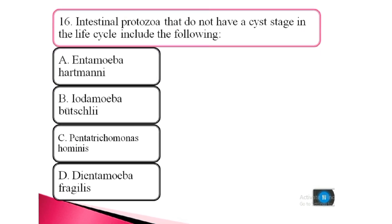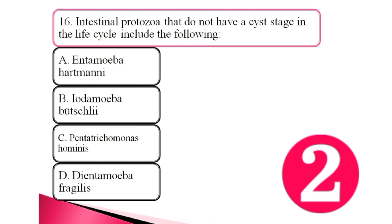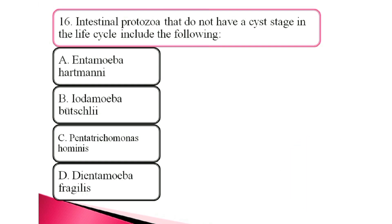Question 16. Intestinal protozoa that do not have a cyst stage in the life cycle include the following: a. Entamoeba hartmanni, b. Endolimax nana, c. Pentatrichomonas hominis, d. Dientamoeba fragilis. The answer is d. Dientamoeba fragilis.